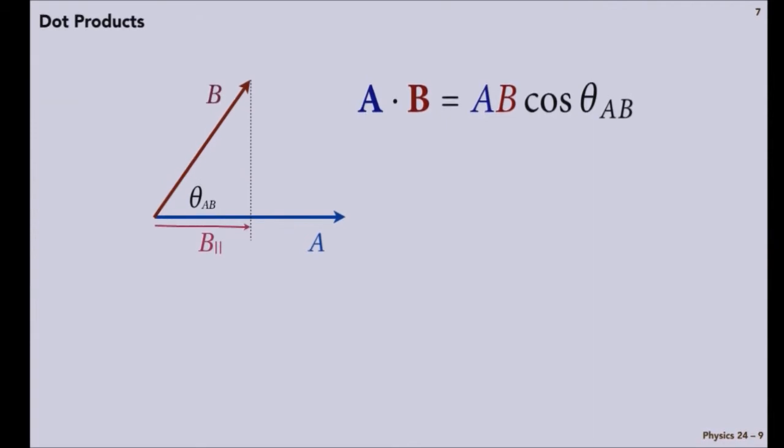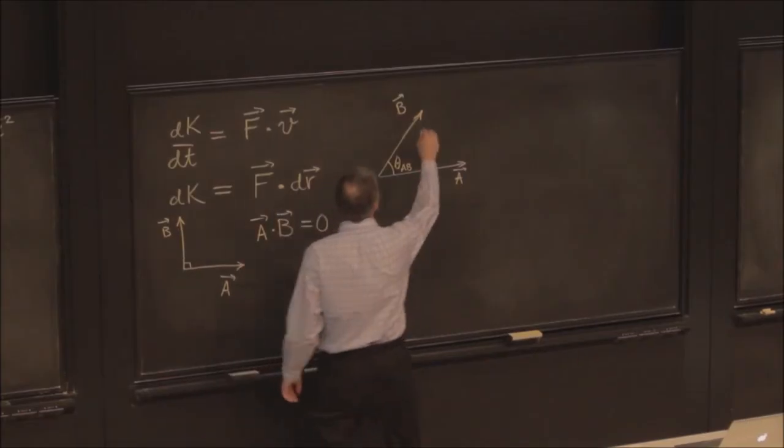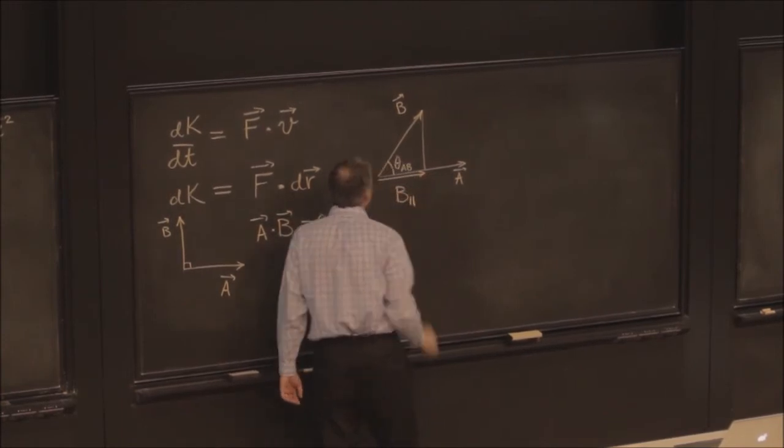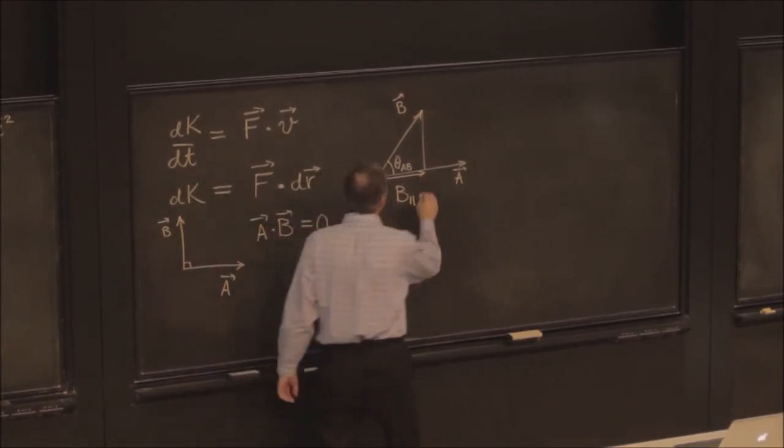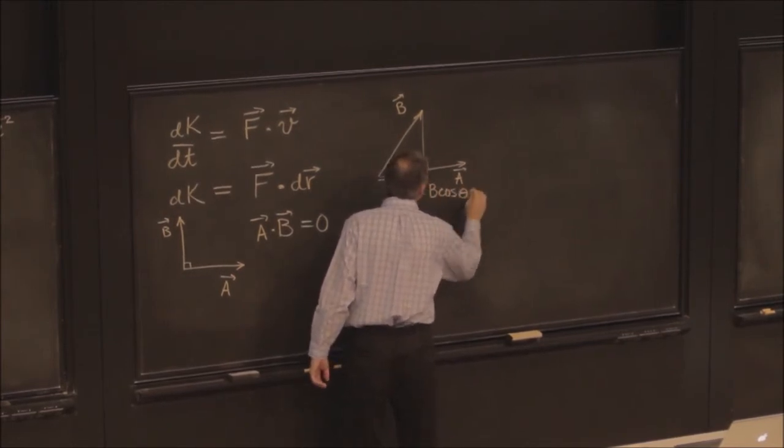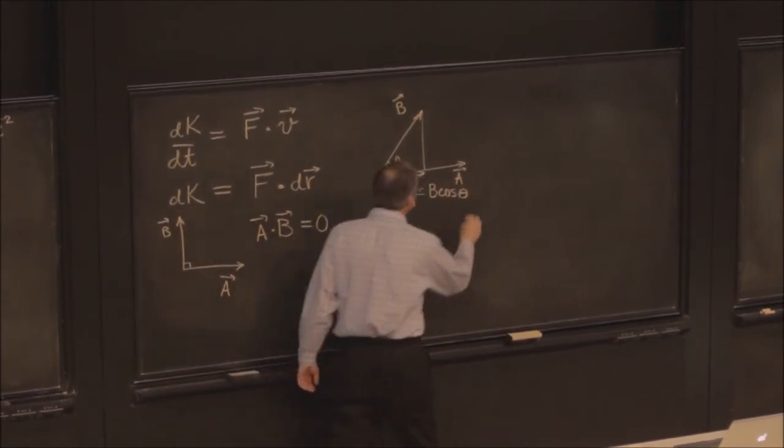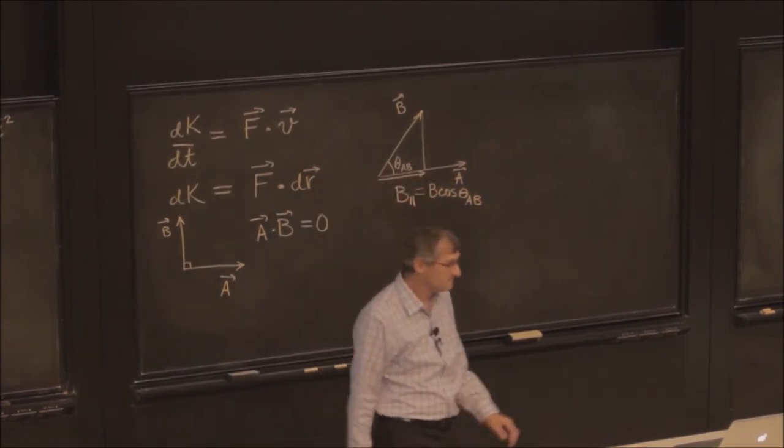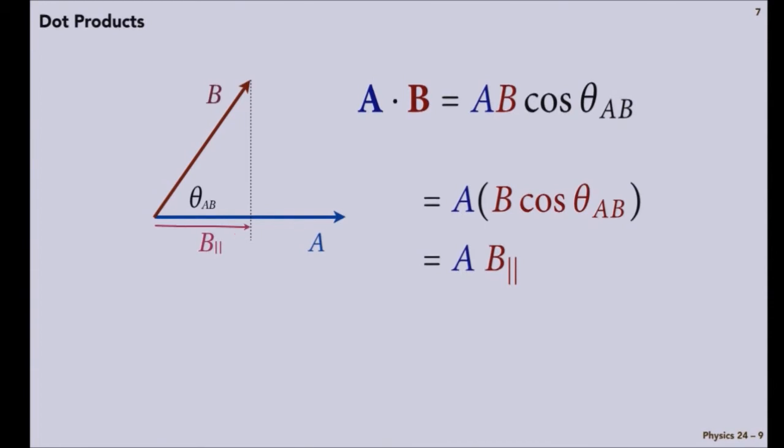We saw before that we only care about the component that's parallel. So let me extract the component of b that's parallel. That would be this component. And that would be the magnitude of b times the cosine of the angle theta_ab. So a times b parallel.